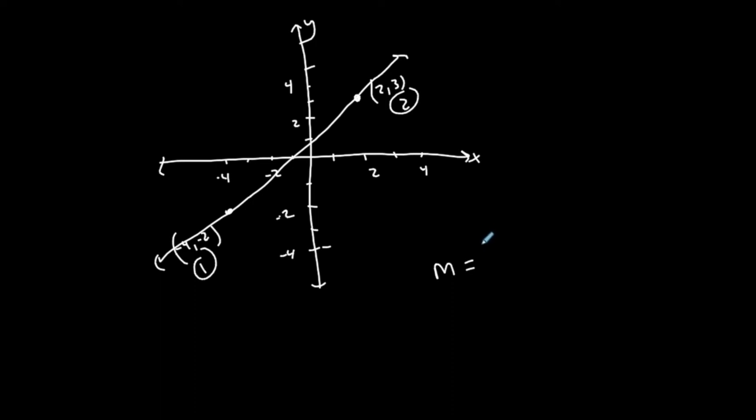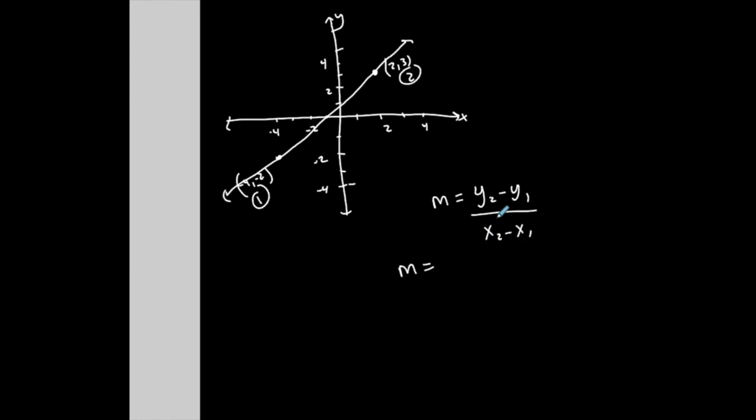y₂ minus y₁ over x₂ minus x₁—if I am finding a slope based on the slope formula, this is my second y-coordinate, in this case positive 3, minus my first y-coordinate, which in this case is negative 2 (minus negative 2), over my second x-coordinate, which in this case is positive 2, minus my first x-coordinate, which in this case is negative 4.